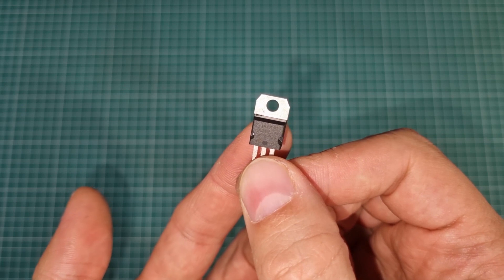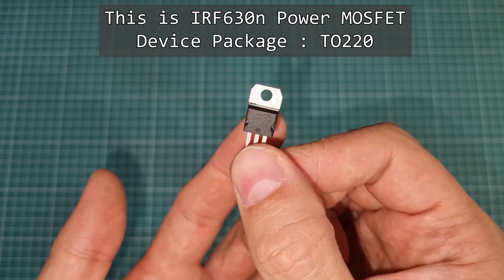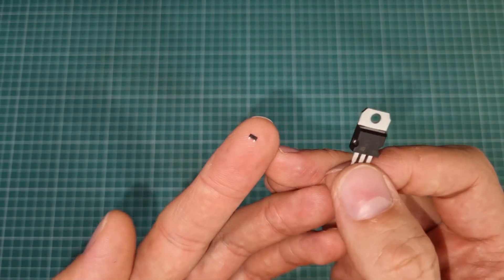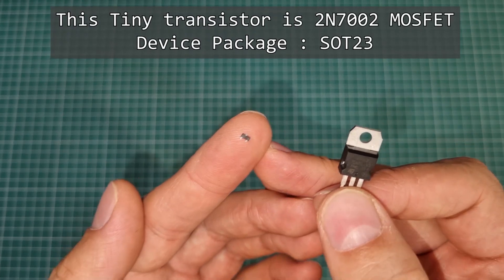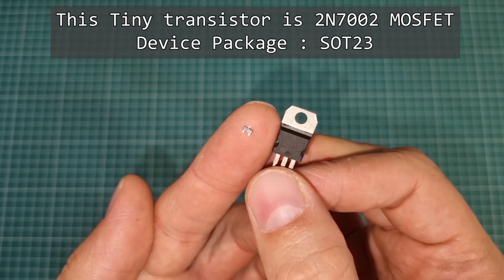Most beginners think that MOSFETs are something like this. But I have to say that this tiny and low-current transistor is also a MOSFET. If somebody tells you MOSFETs are for high current, BJTs are for low current, it is just bullshit.